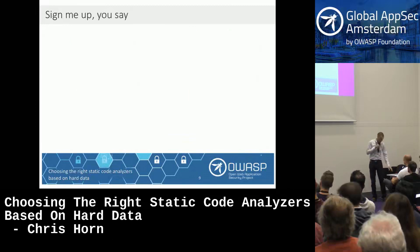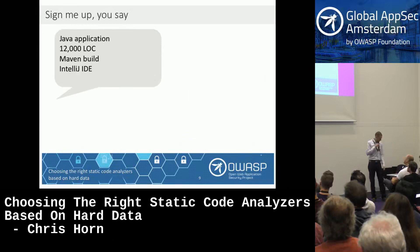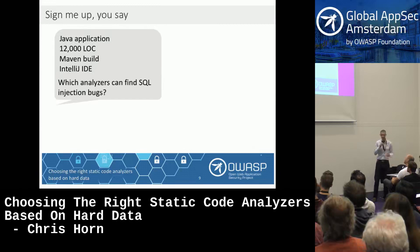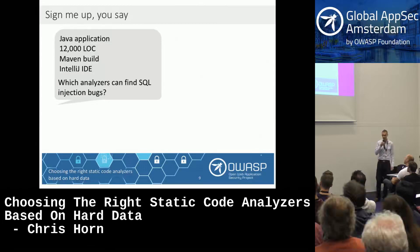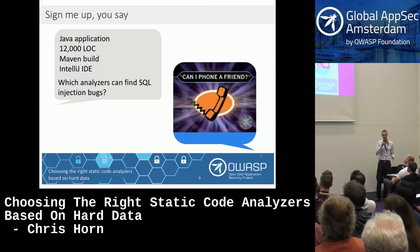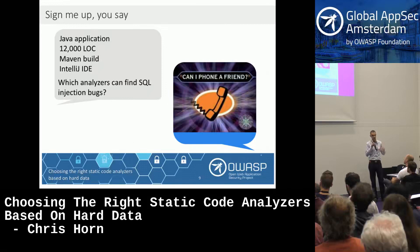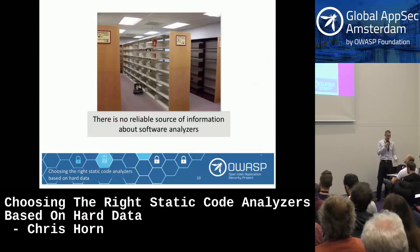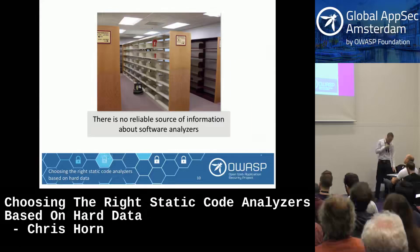So you're signed up — you've got a Java application, 12,000 lines of code, a build environment, some IDEs, and maybe you know what kinds of things you'd like to look for, like injection. Which static analyzer should you use? Somebody would have to phone a friend because there's not a lot of information out there. There are some lists you can find, like awesome static analysis on GitHub, but that's just a pointer to a website. You're stuck collecting all this information about these analyzers trying to figure out which ones meet your needs. There's really not a good source of reliable information about these tools — and that's where we come in.